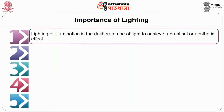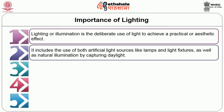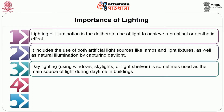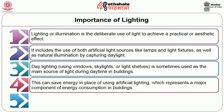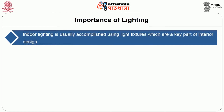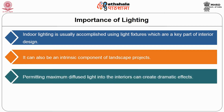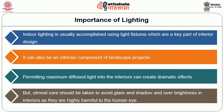Lighting or illumination is the deliberate use of light to achieve a practical or aesthetic effect. It includes the use of both artificial light sources like lamps and light fixtures, as well as natural illumination by capturing daylight. Daylighting — using daylight through windows, skylights or light sleeves — is sometimes used as a main source during daytime, saving energy in place of artificial lighting, which represents a major component of energy consumption in buildings. Proper lighting can enhance task performance, improve the appearance of an area, or have positive psychological effects on occupants. Permitting maximum diffused light into interiors can create dramatic effects, but utmost care should be taken to avoid glare, shadow and over-brightness, which are highly harmful to the human eye.